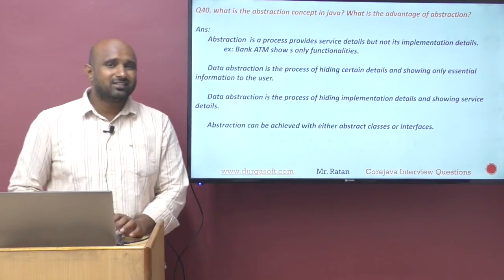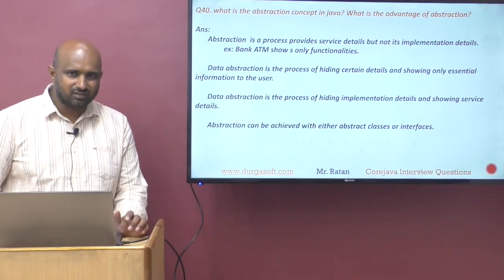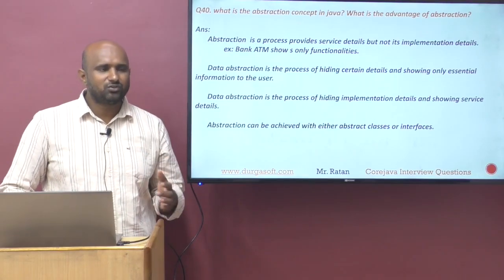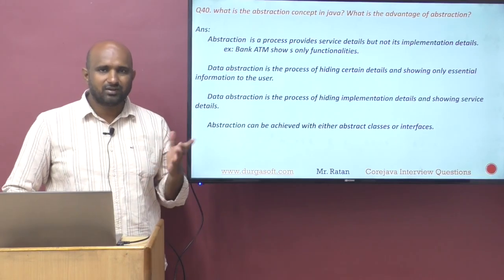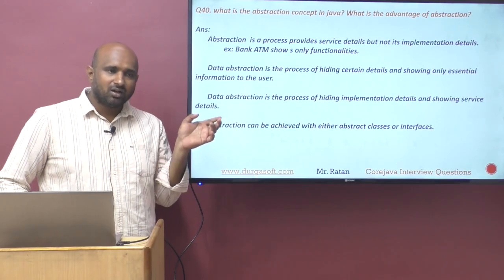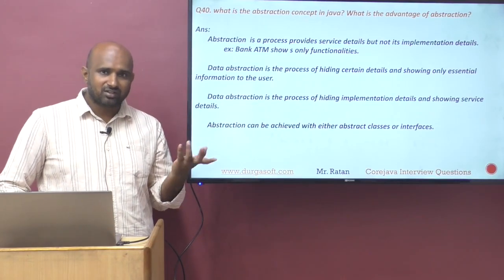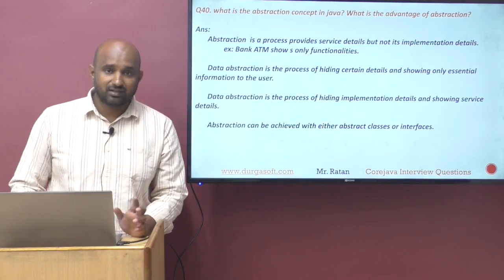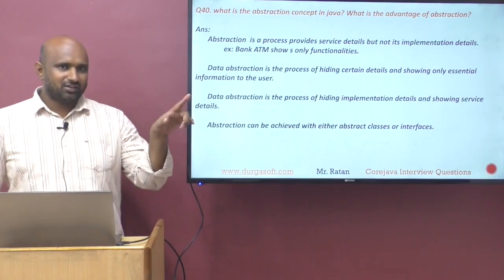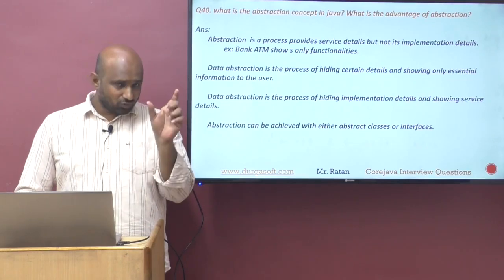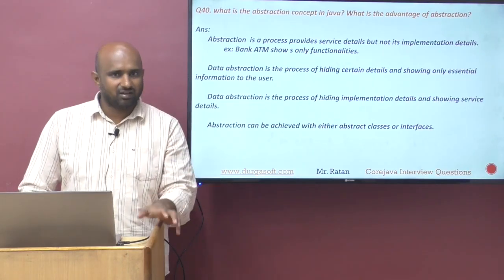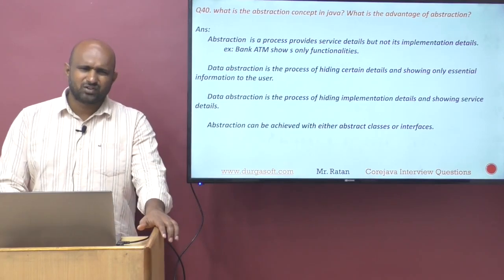Abstraction is a process providing service details, but not implementation details. Implementation is in the child classes. The best example is a bank ATM screen showing a list of functionalities — implementations you don't know. Even the TV screen shows on, off, and volume increase, and everything is touch only. Where you click on the touch, the TV will start — it's showing only necessary things, and implementations are internal.